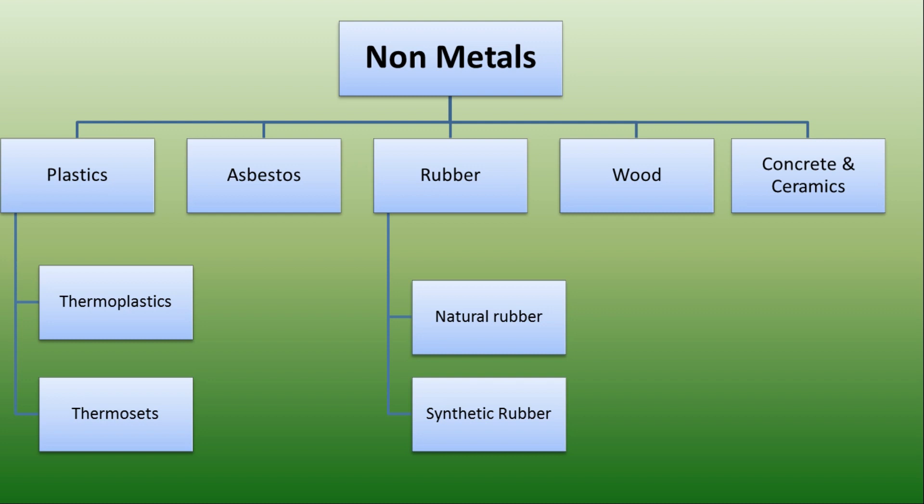Next, rubbers. Rubbers are classified as natural rubber and synthetic rubber. Natural rubbers are made from the rubber tree itself and they are used in automobile and medical parts. Synthetic rubber is made by synthesis of petroleum products and they are used in making tires, gaskets, and packings.